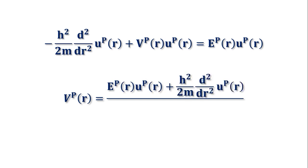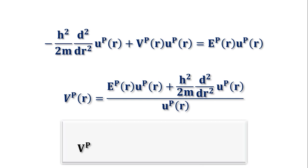Or we can also say vp(r) equals εp(r)up(r) + ℏ²/2m d²/dr² up(r), whole divided by up(r).